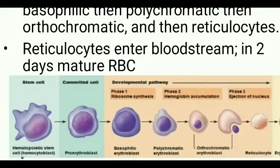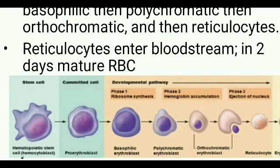From the pro-erythroblast, we get the erythroblast, also called normoblast. Pro-erythroblast is also called pro-normoblast. From pro-normoblast we get early normoblast, also called basophilic erythroblast. From basophilic erythroblast, we get polychromatic erythroblast, also called intermediate normoblast. From polychromatic erythroblast, we get orthochromatic erythroblast, also called late normoblast.